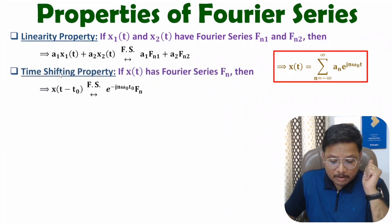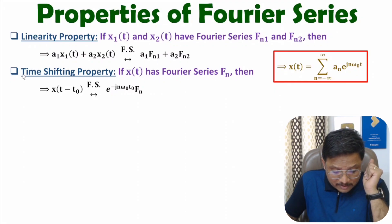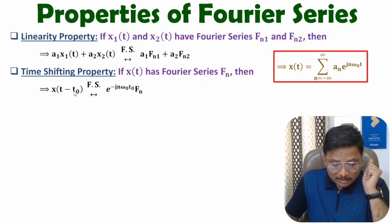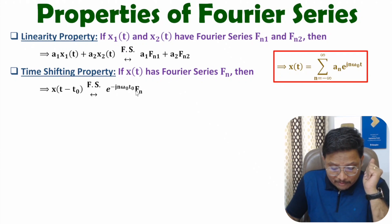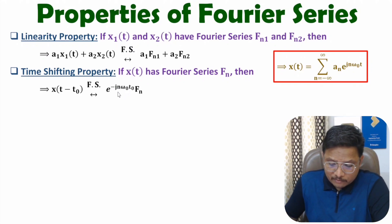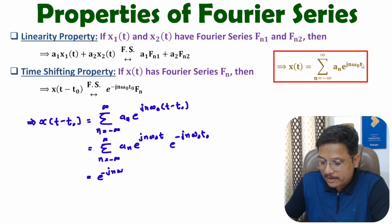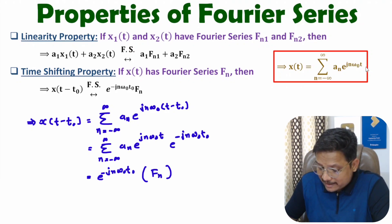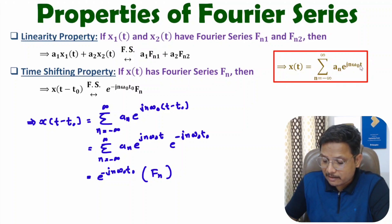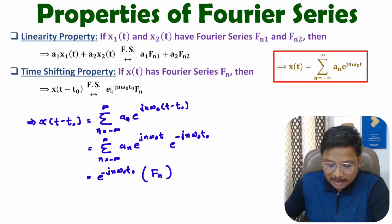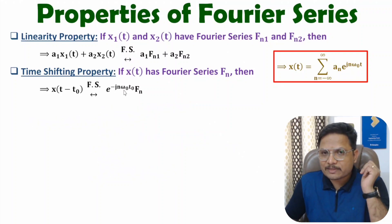The second property is time shifting. If you have signal x(t) with Fourier series f(n), then after time shifting to x(t - t₀), the Fourier series becomes f(n) multiplied by e to the power minus jnω₀t₀. The reason is that in the Fourier series equation, replacing t by t - t₀ introduces the factor e^(-jnω₀t₀) in the exponent, so along with f(n) we must multiply by e^(-jnω₀t₀). That is how the time shifting property works.